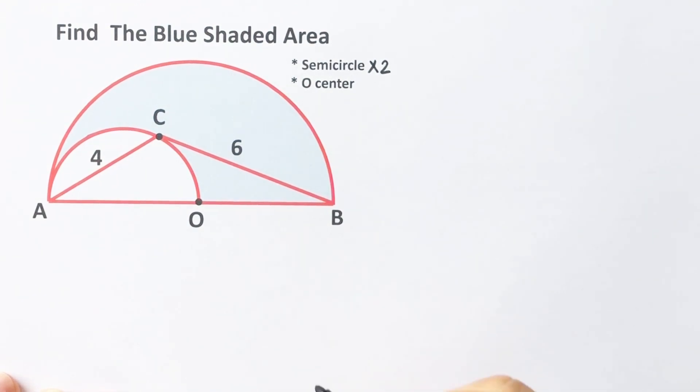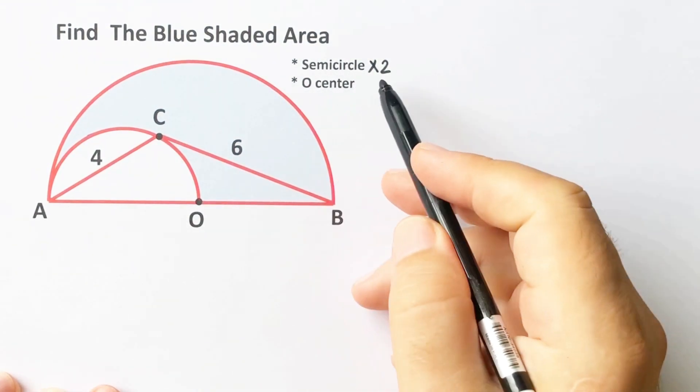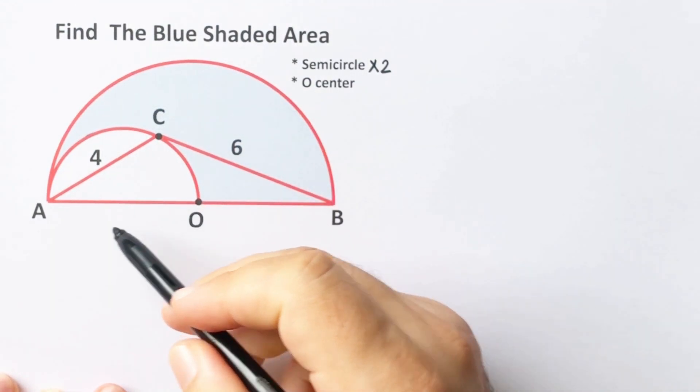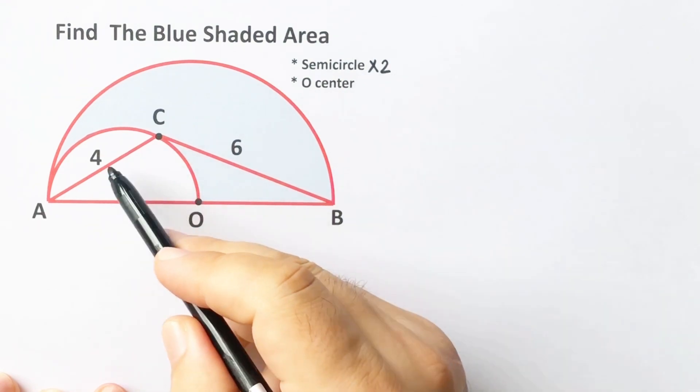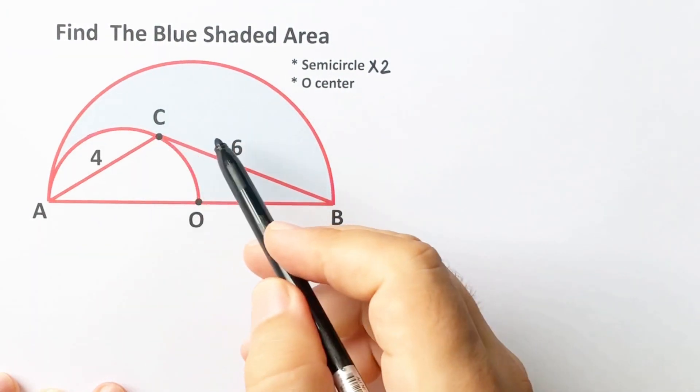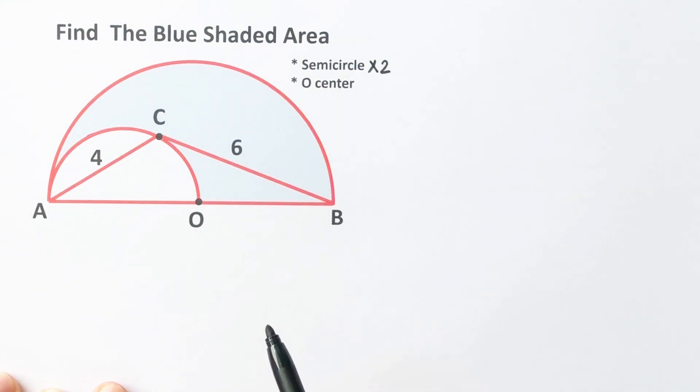Hello everyone, in this video we have two semicircles and O is the center of the big semicircle. Here is 4, here is 6, and this blue shaded area is asked.